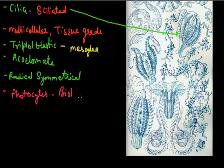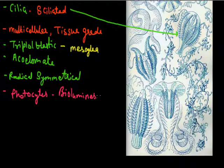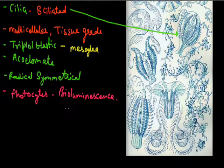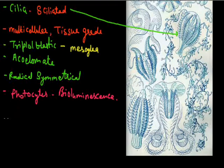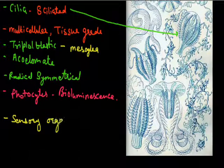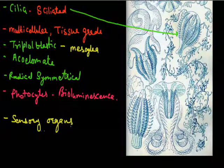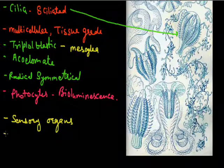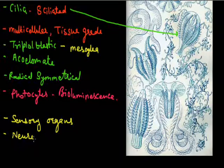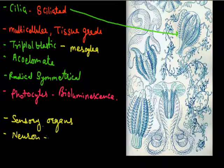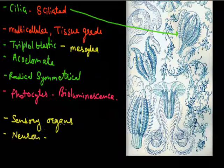Photocyte cells are responsible for bioluminescence. Bioluminescence means these animals emit light. These animals also have sensory organs. They also have neurons which form a network, and this neural net acts as a brain and is responsible for control and coordination in the animal.